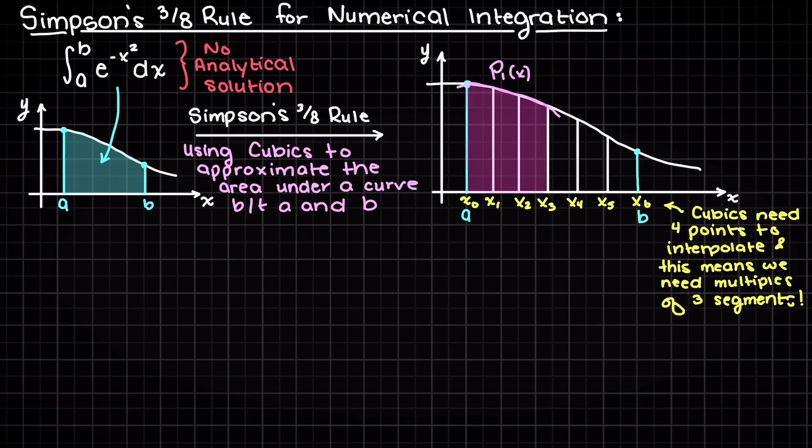And to that we will add the result of our second parabola, p2 of x, which is fit to points x3, x4, x5, and x6, and this orange area will be the area under this cubic.